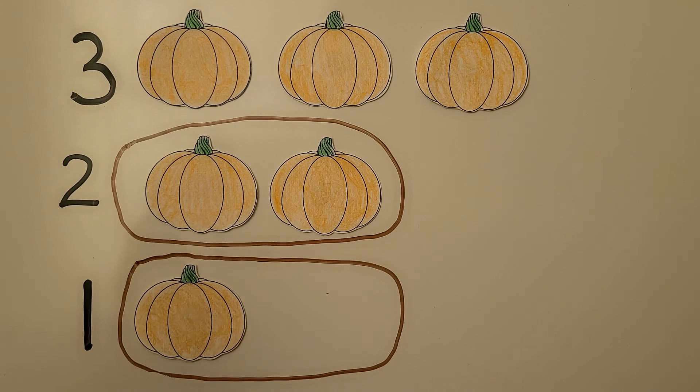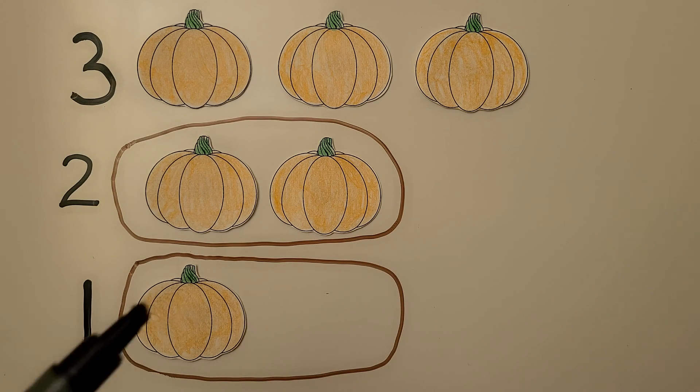If Tala has 3, Bob could have just 1. That's less than 3.